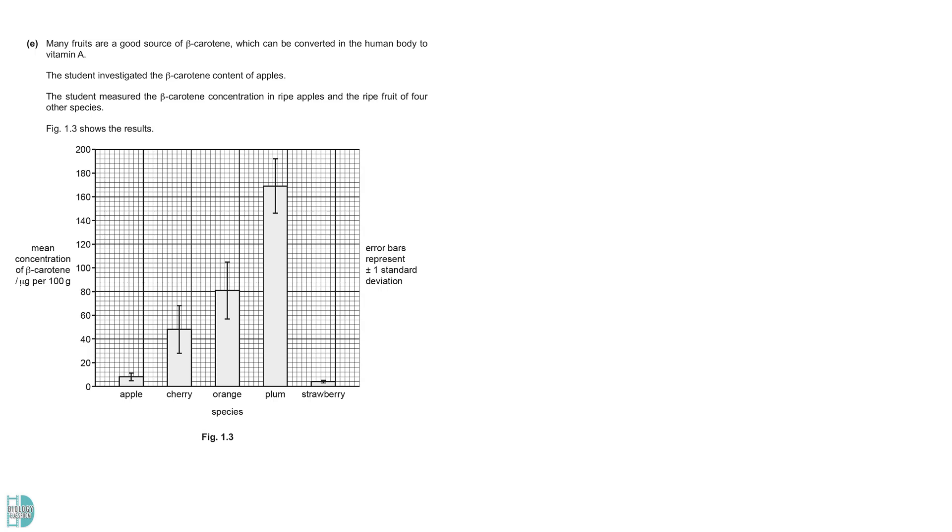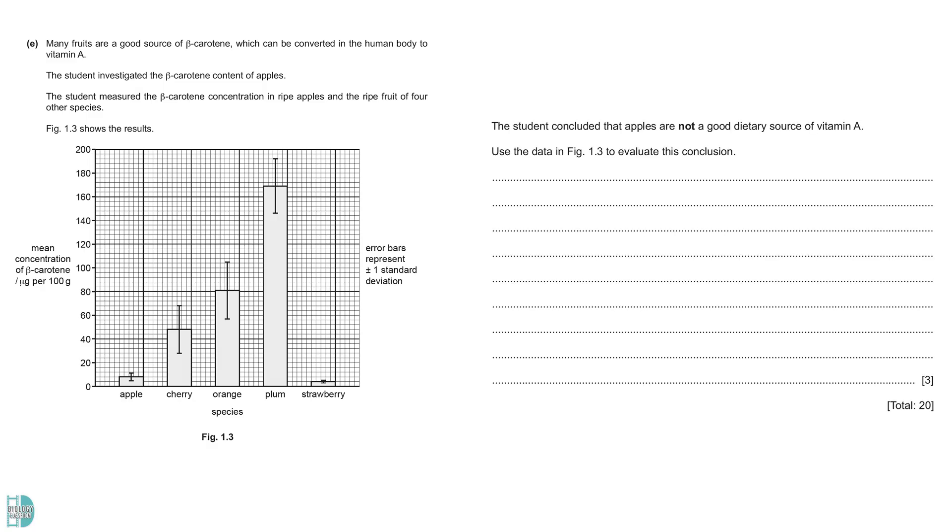In part E, we have a graph that shows the mean concentration of beta-carotene in five different fruits. You are asked to evaluate a conclusion that states that apples are not a good dietary source of vitamin A. The command word here is EVALUATE. It indicates that marks will be given for suggestions both for and against the conclusion. You should discuss both sides in your answer. Let's start with the support part.